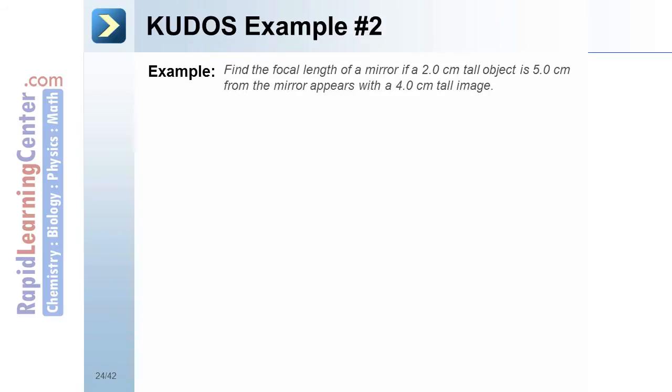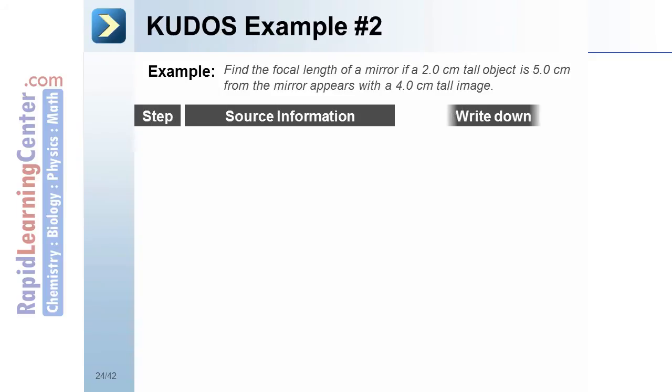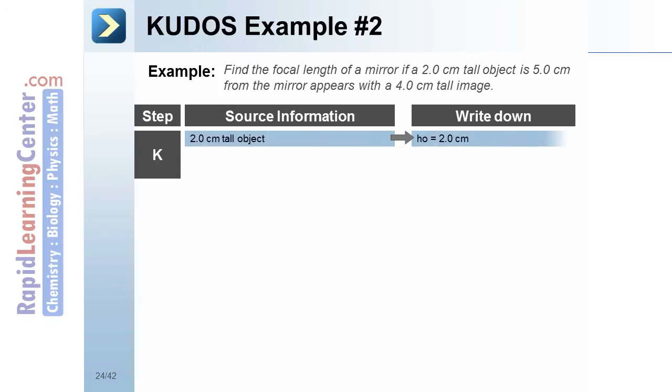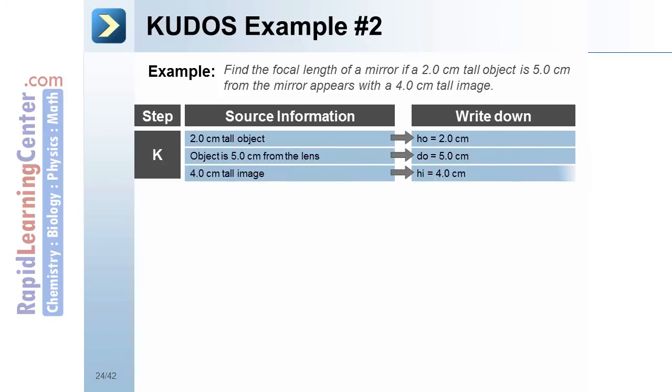KUDOS example number two. Find the focal length of a mirror if a 2.0 cm tall object is 5.0 cm from the mirror with a 4.0 cm tall image. Step one, the known. The height of the object is given. The object distance is given. And the height of the image is given.